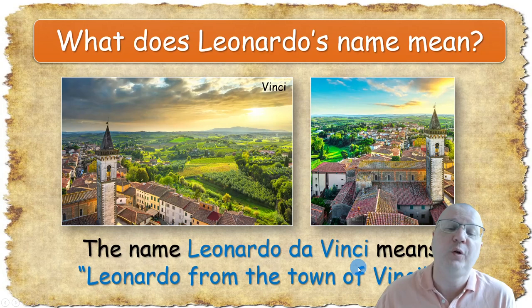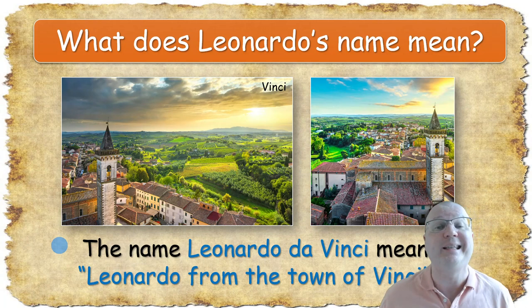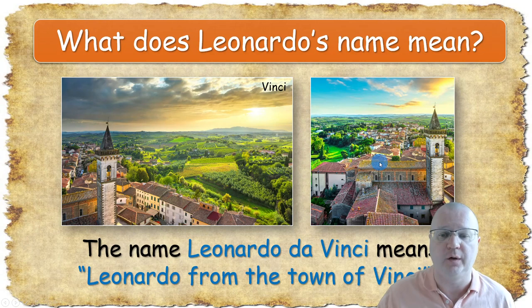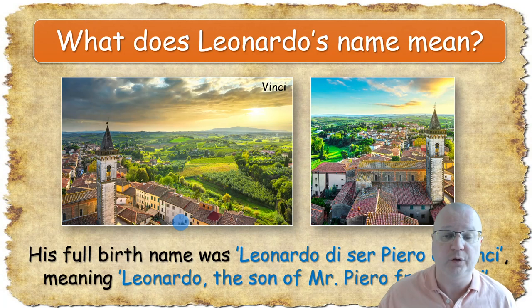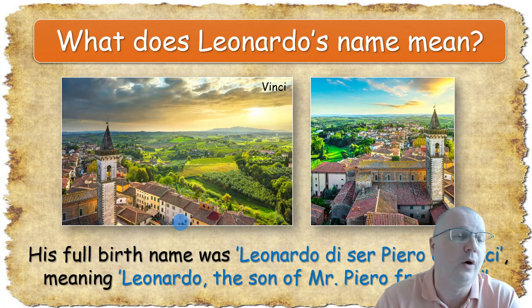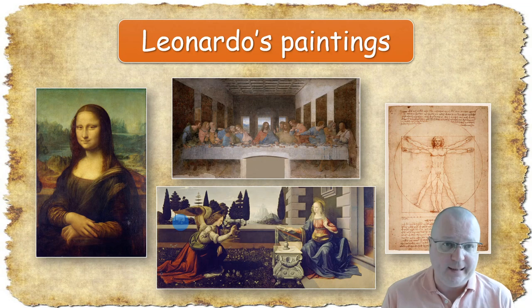What does Leonardo's name mean? Very few people know this, so it will be interesting for students. The name Leonardo da Vinci means 'Leonardo from the town of Vinci.' These are pictures of the town of Vinci in Italy. His full birth name was Leonardo di Ser Piero da Vinci, meaning 'Leonardo the son of Mr. Piero from Vinci.' Long ago, if you did not come from a wealthy family, you had no right to have a last name — you were named after the town you were born in.